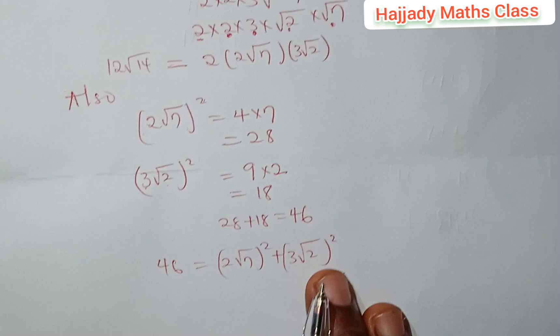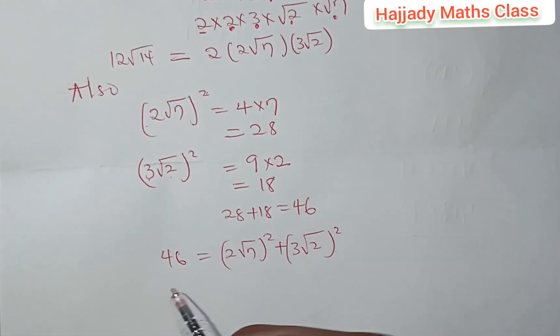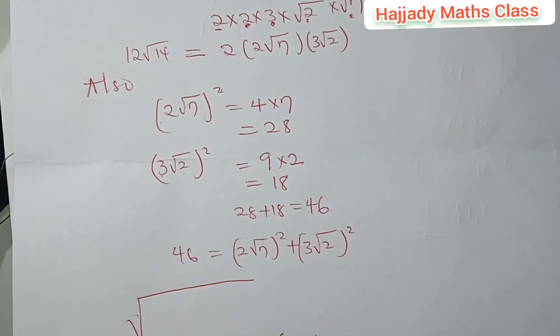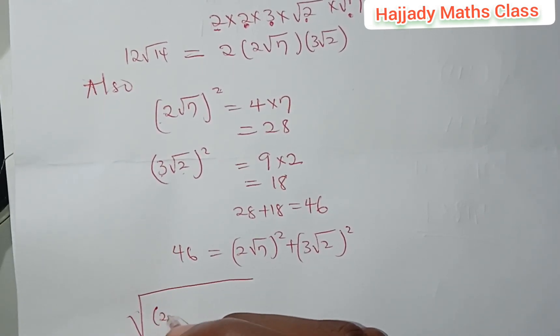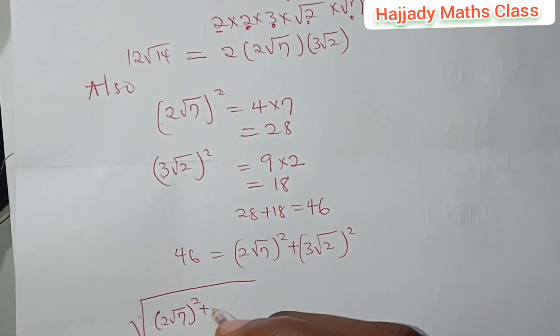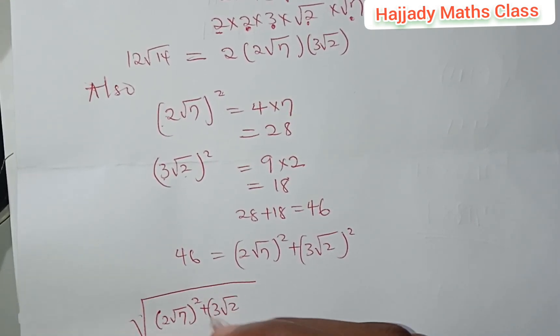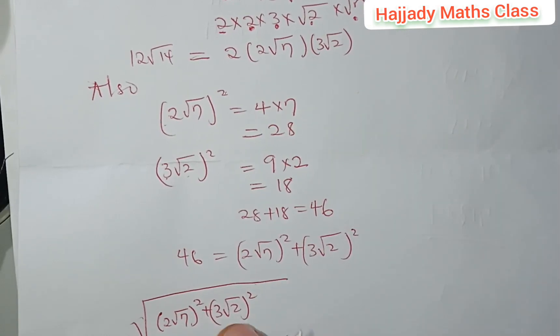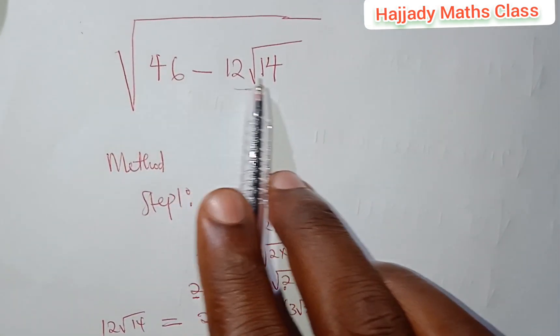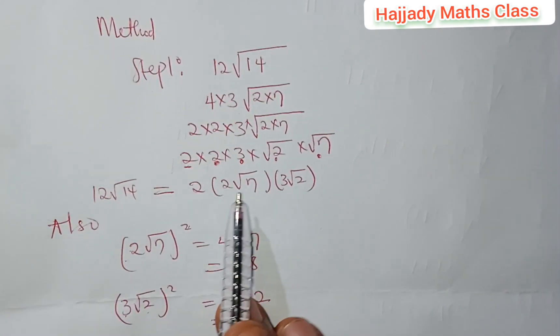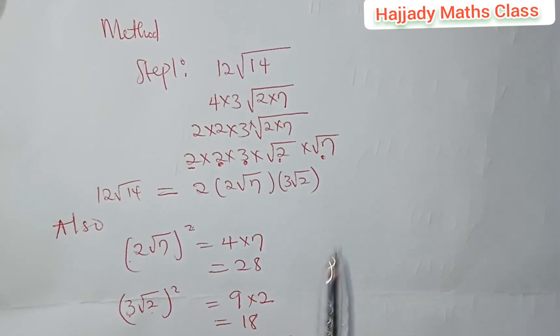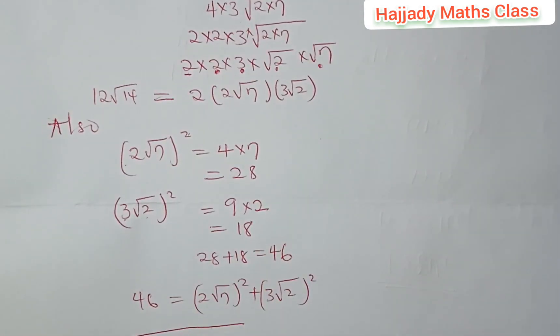So, we are replacing that with our 46 up there from the question. So, this takes the place of (2√7)² + (3√2)². And from our question, don't forget that we also have - 12√14. And our 12√14 is equivalent to 2 × 2√7 × 3√2. So, it takes the place of that also.